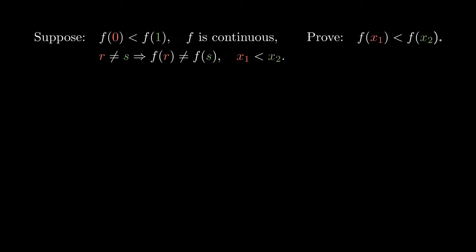Suppose you have f(0) being smaller than f(1). Suppose the function f is continuous. And suppose different inputs to the function give different outputs. Finally, suppose you have two numbers x1 and x2, where x1 is smaller than x2. Can you prove that small inputs when plugged into the function give small outputs? Pause the video if you'd like to try it for yourself, and when you're ready, unpause for the solution.